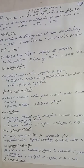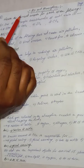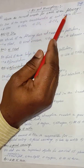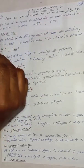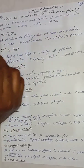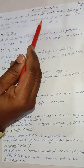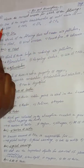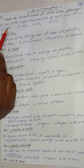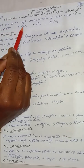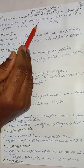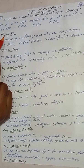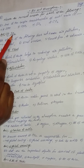Now discuss the MCQs. Choose the correct answer for each of the following. First question: one of the major constituents of acid rain is — SPW, CFCs, SO2, CO2. The correct answer is option C, SO2.